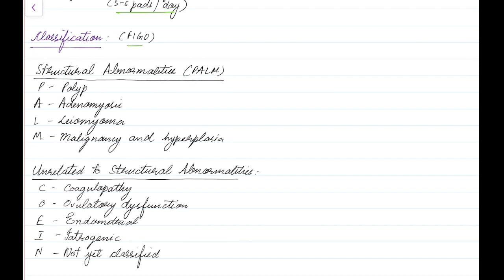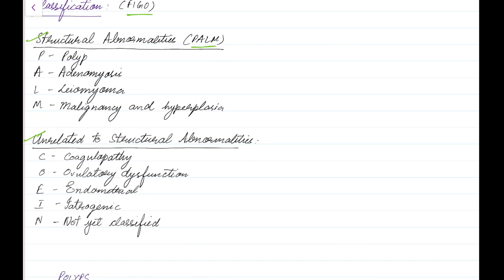FIGO has classified abnormal uterine bleeding into structural abnormalities and abnormal uterine bleeding unrelated to structural abnormalities. The mnemonic for remembering this is PALM-COEIN. The structural abnormalities are denoted by the mnemonic PALM: P stands for polyp, A stands for adenomyosis, L stands for leiomyoma, and M stands for malignancy and hyperplasia.